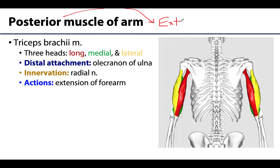The triceps brachii is a huge muscle — you can palpate your own and feel that it spans a very large area. As the name suggests, there are three heads: the long, the medial (which is difficult to see and often requires reflecting the others), and the lateral. All three come together into a common tendon with a distal attachment on the olecranon of the ulna — the point of the elbow — which is large precisely because of this powerful muscle attachment.